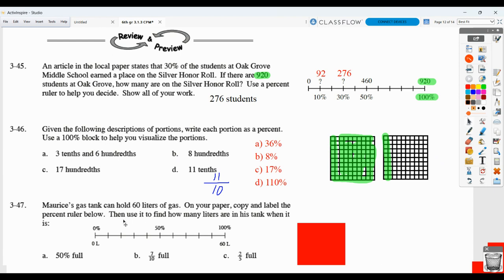Here, this gas tank can hold 60 liters of gas. They want you to copy this percent ruler and figure out how many liters are in this tank in these situations. So first of all, again, a percent ruler means we take a line segment, divide it into 10 parts. Each part represents 10%. So this is 10%, total of 20%, 30, 40, 50, and so on.